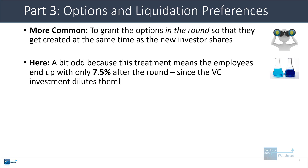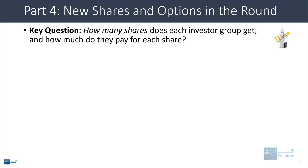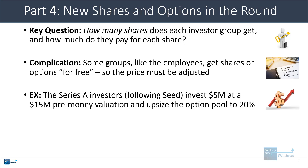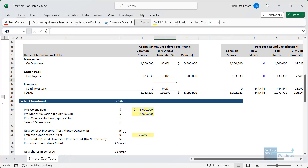Those are the basics for options and liquidation preferences. Now let's look at new shares and options in the round with a slightly more complex example. One key question is how many shares does each investor group get when they invest, and how much do they pay per share? Some groups like employees get shares or options for free, so the price in each round has to be adjusted for that. For the Series A, investors invest $5 million at a $15 million pre-money valuation and also upsize the options pool from 7.5% to 20%.